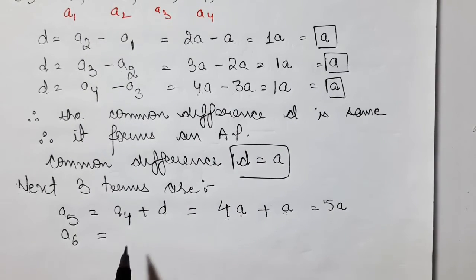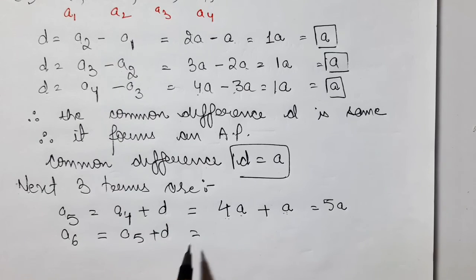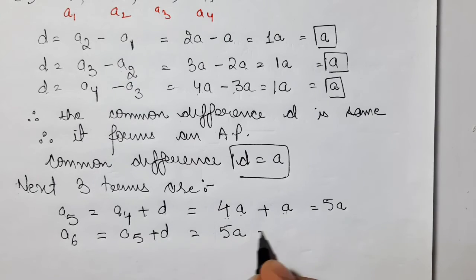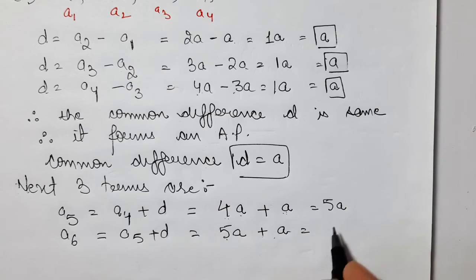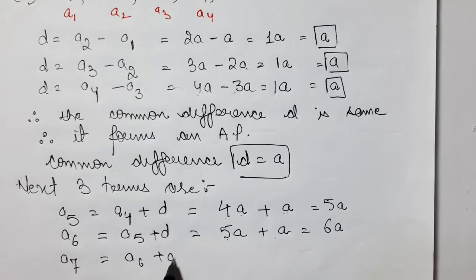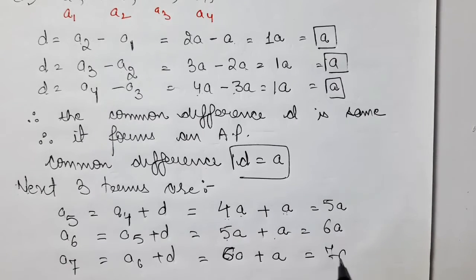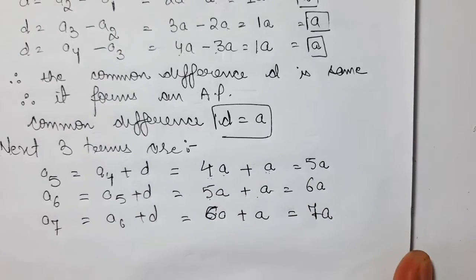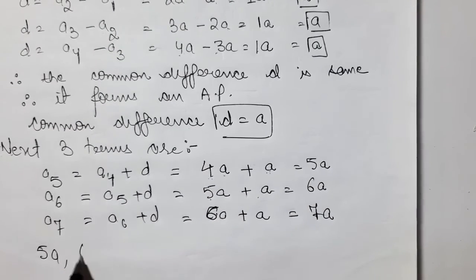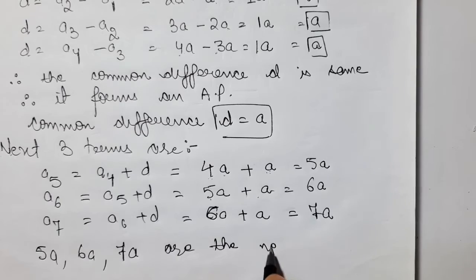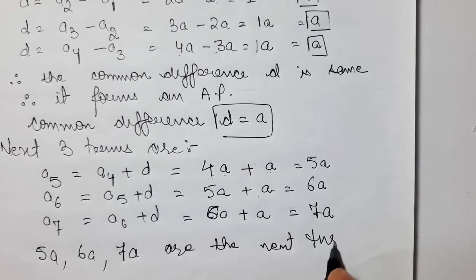For the 6th term, we take A5 plus D: 5A plus A equals 6A. For the 7th term, A6 plus D: 6A plus A equals 7A. So the next three terms are 5A, 6A, and 7A.